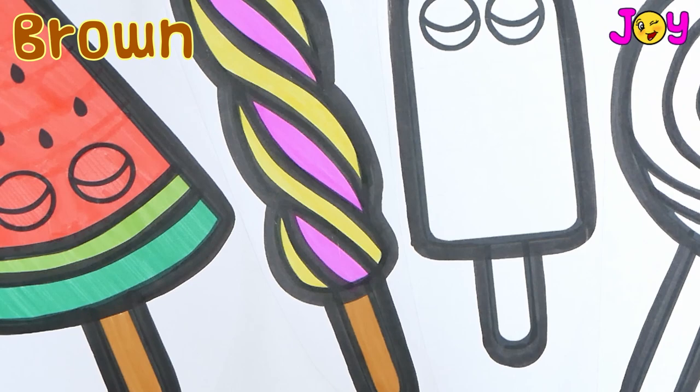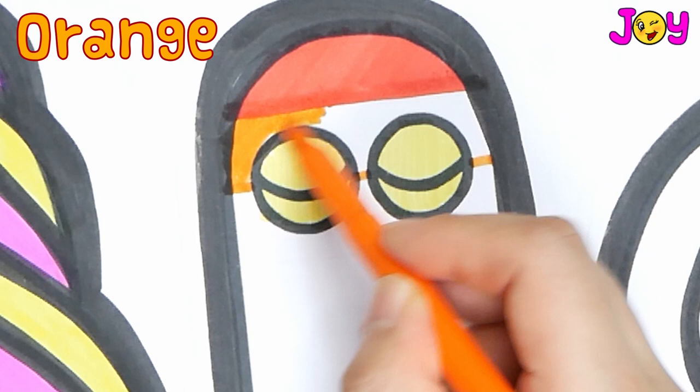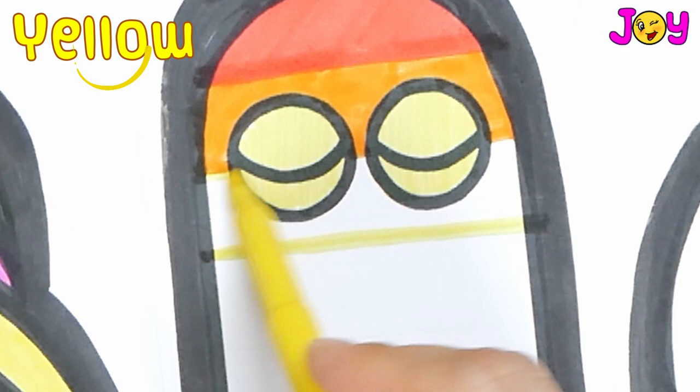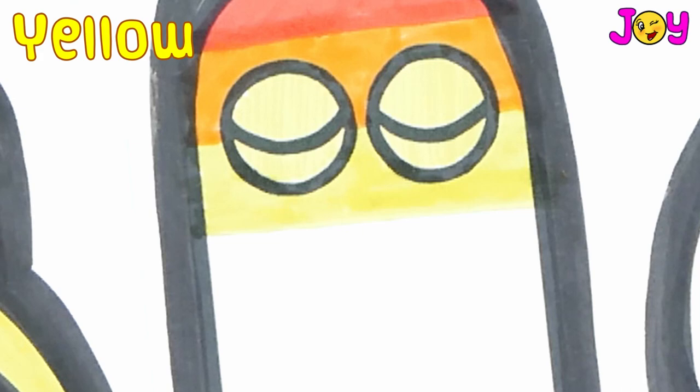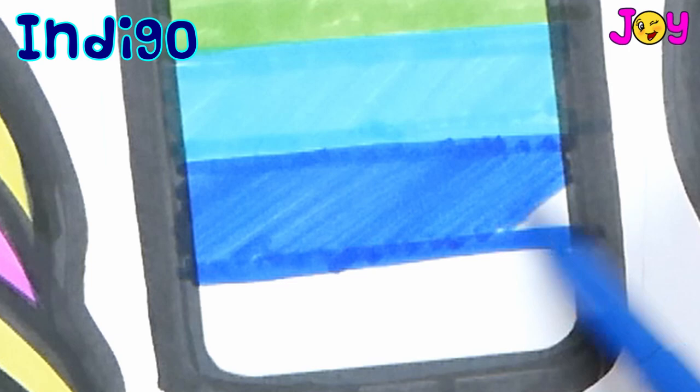Yellow. Now let's make it a rainbow popsicle. Red, orange, yellow, green, blue, indigo, violet.